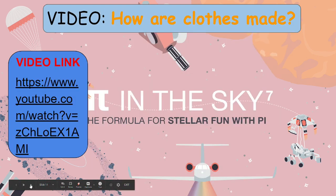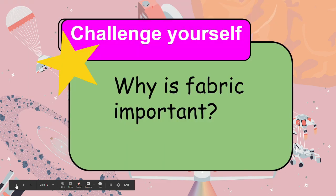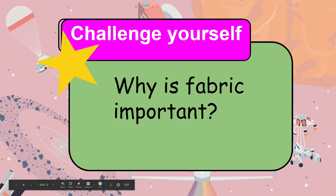In this video, it tells us how clothes are made. After watching, you will learn that clothing has been made from many materials such as wool, cotton, and silk. Now, something to think about: Why is fabric important? Why do you think fabric has been used? Future scientists, let's hear your ideas.